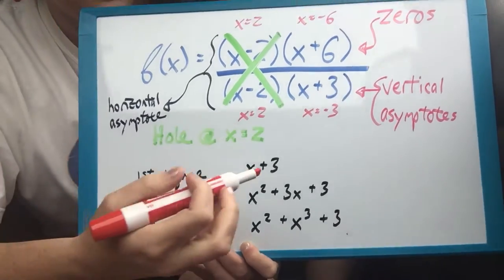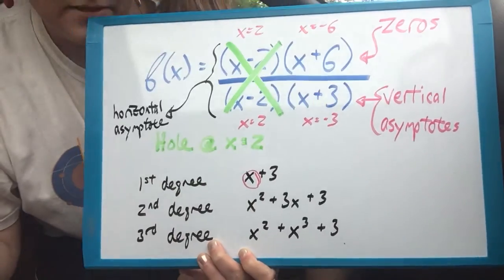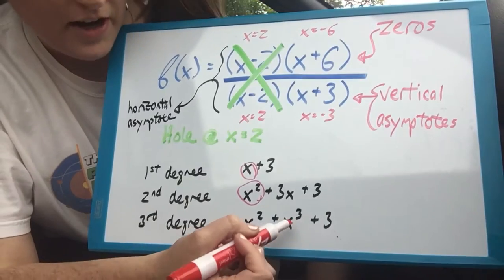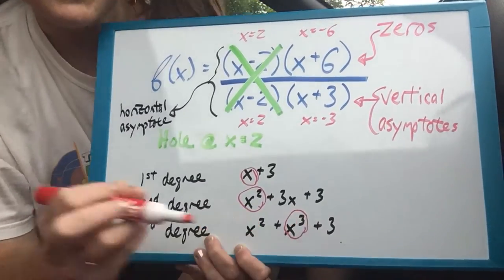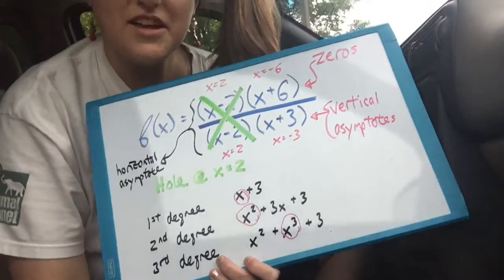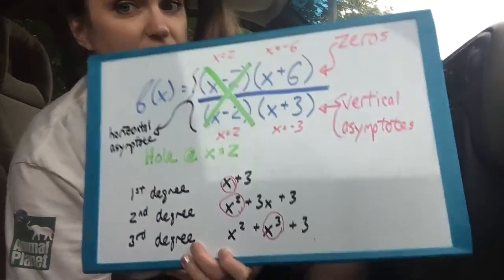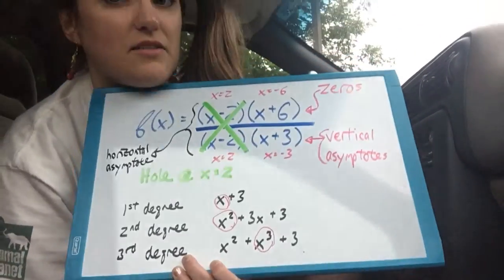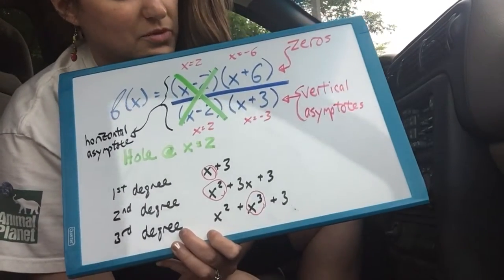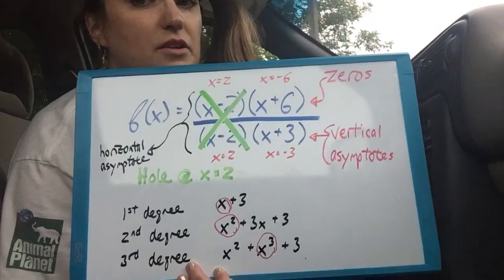So just in case y'all forgot, first degree means that our highest term is a single x. Second degree means our highest term is x squared. Third degree means our highest term is x cubed. See how I threw in a little trick on you? Because remember, they might not write it in descending order. So you might have to go searching around for the highest degree. It might not be the very first term. It usually is, but it might not be. So that's what you're comparing in the top and bottom when you're trying to figure out what is the horizontal asymptote.